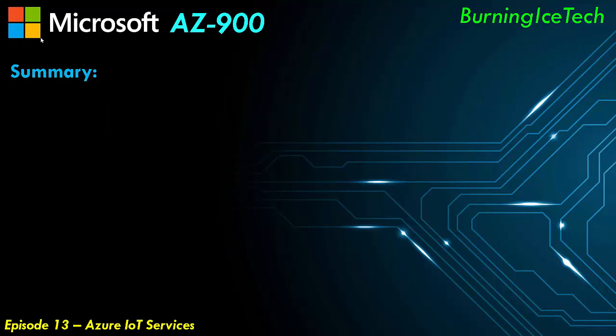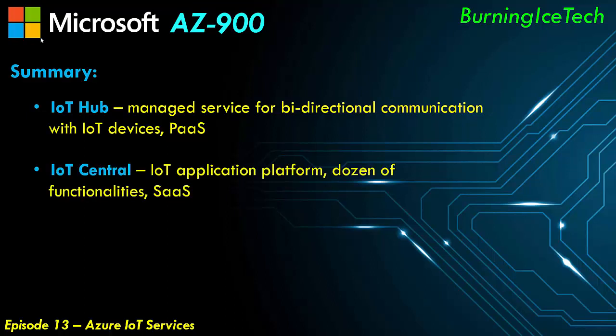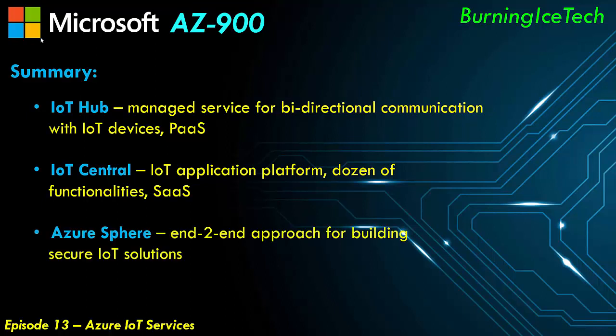To summarize our IoT services: IoT Hub is a managed service for bi-directional communication of IoT devices in the cloud, and a platform as a service used to build custom IoT applications. Your organization can also leverage existing industry-standard specific templates for building IoT solutions — in that case, they can use IoT Central, which is an IoT application platform with dozens of functionalities for provisioning, management, and monitoring of IoT solutions. And lastly, we have Azure Sphere, our end-to-end approach for building secure IoT solutions by providing both hardware, operating system, and communication channels for securing our IoT solutions.